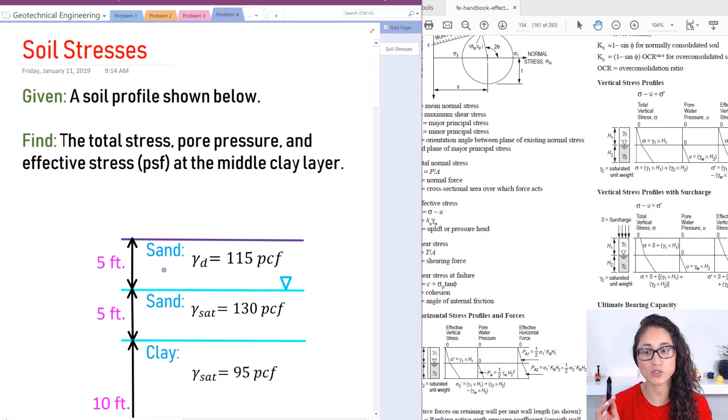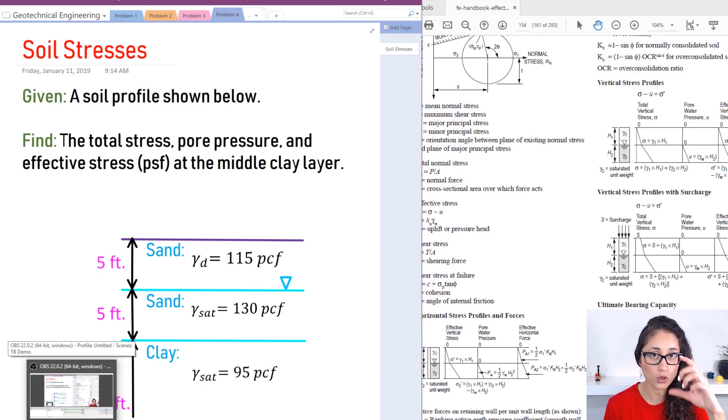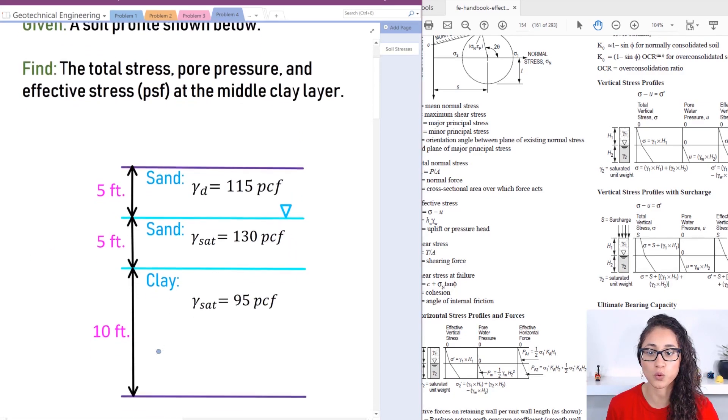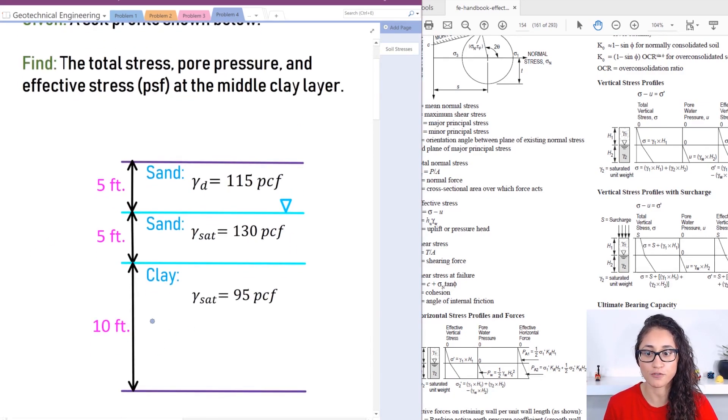We're given this soil profile and we need to calculate the total stress, pore pressure, and the effective stress at the middle of the clay layer. We don't want it for this whole soil profile, we just want somewhere here at five feet, which is the middle of our clay layer. Before we start solving, I want to first go over these three terms.